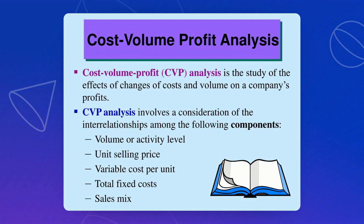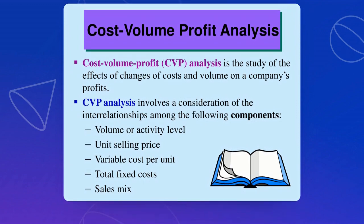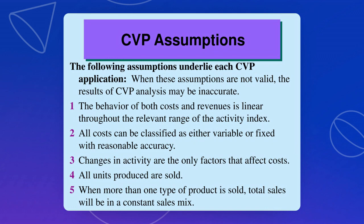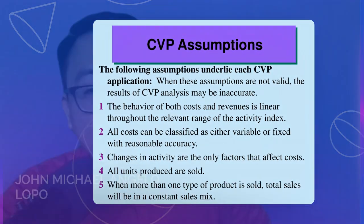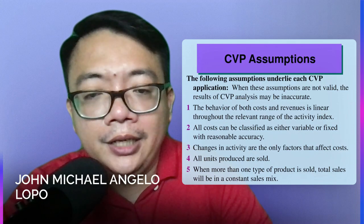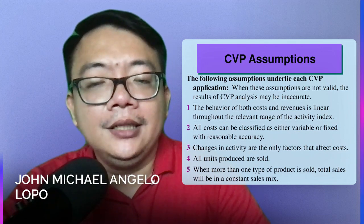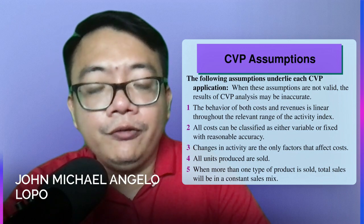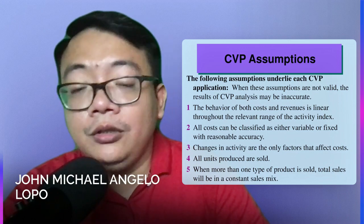We go to these assumptions. The following are the assumptions that underline each CVP component or application. Number one, the behavior of your cost and revenue should be linear throughout the relevant range of the activity index. Number two, all costs can be classified as either variable or fixed. Number three, changes in the activity level are the only factors that will affect your cost — only the sales.